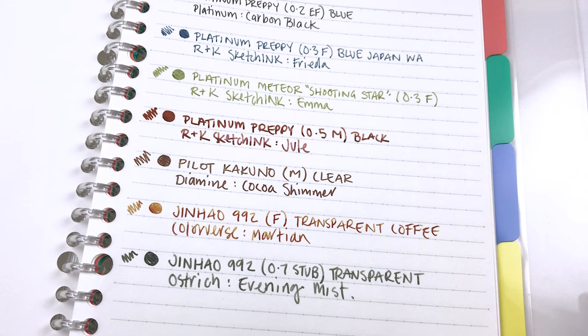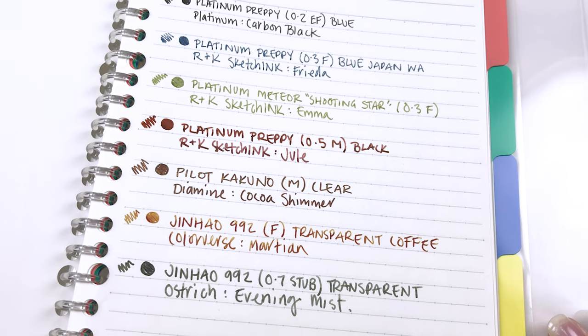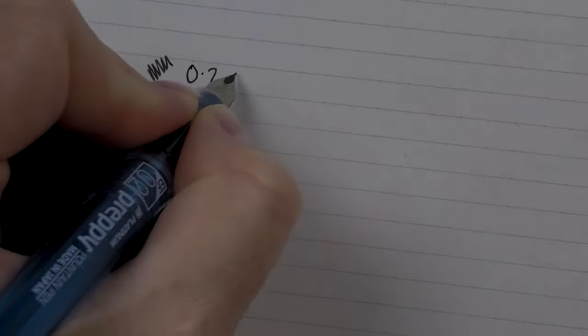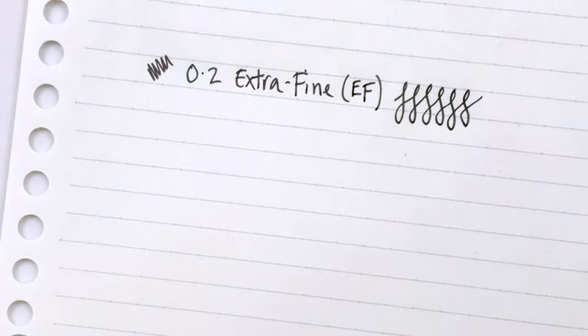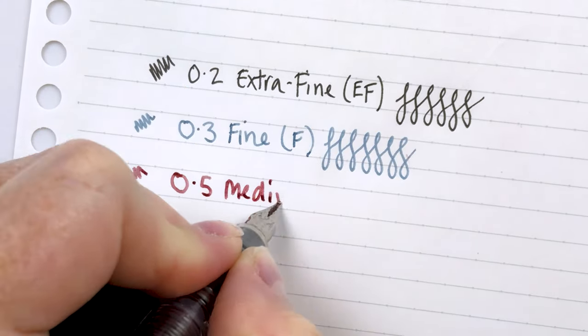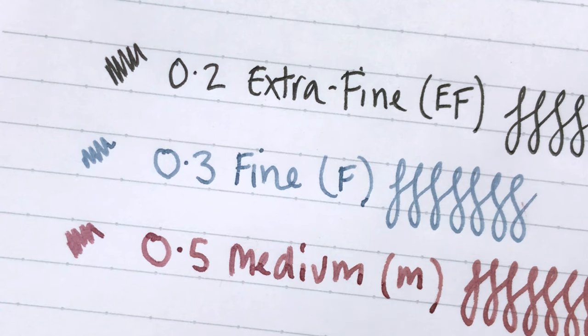This was just a quick little look at three different brands: the Platinum, the Pilot, and the Jinhao. There's a whole bunch of other ones out there for similar prices, but I thought I would just show you a couple from my collection that I still love. If you're starting out, maybe you don't know what width of pen you like. So maybe getting one of each of the Preppies—an Extra Fine, a Fine, and a Medium—and just see which one you like the best.